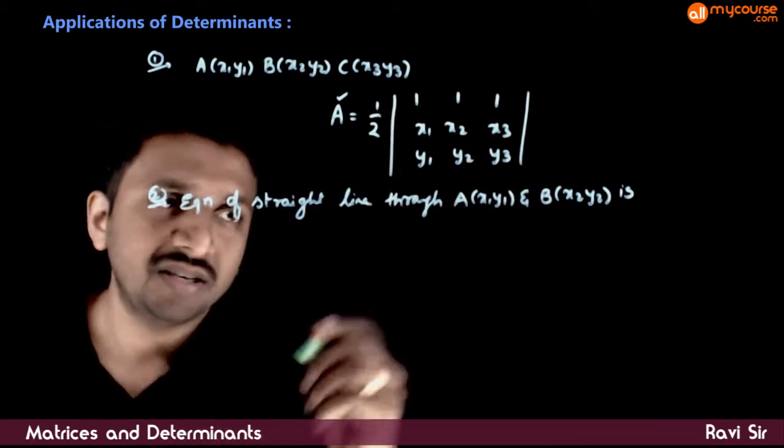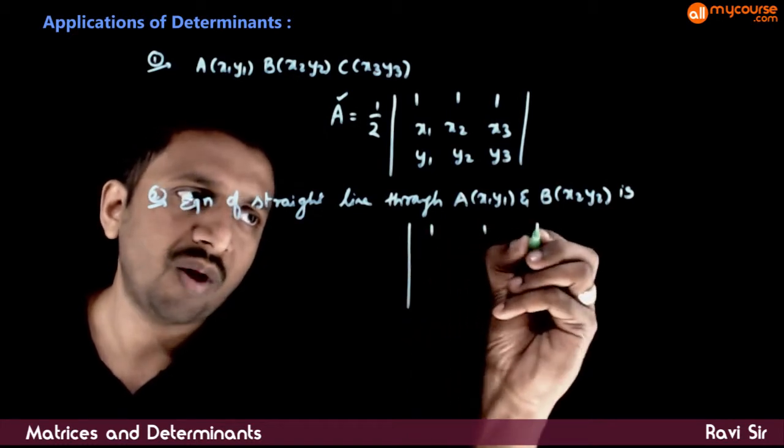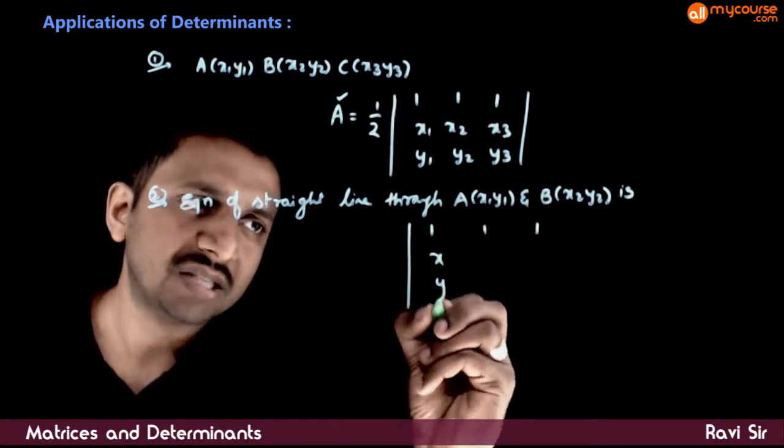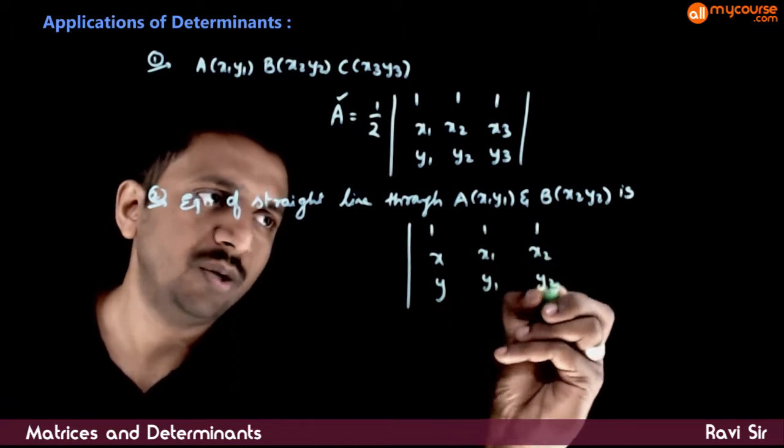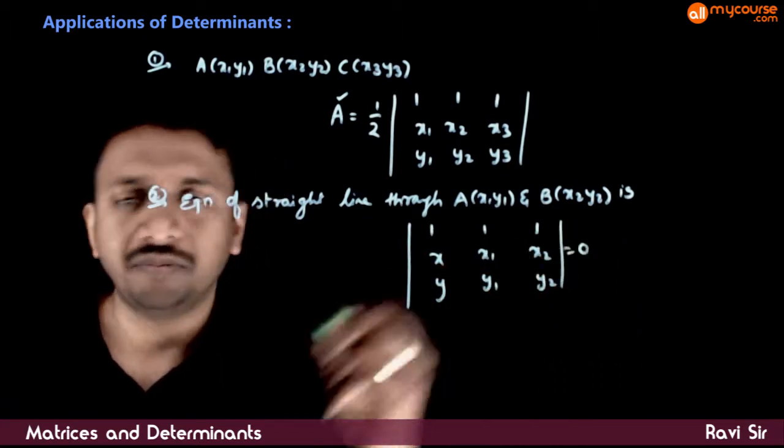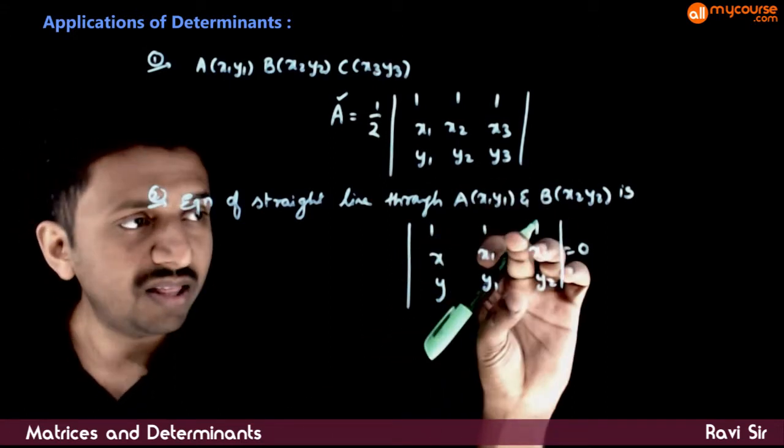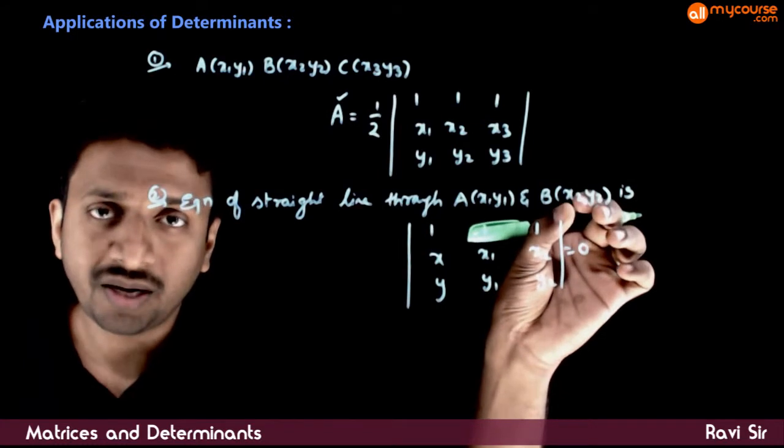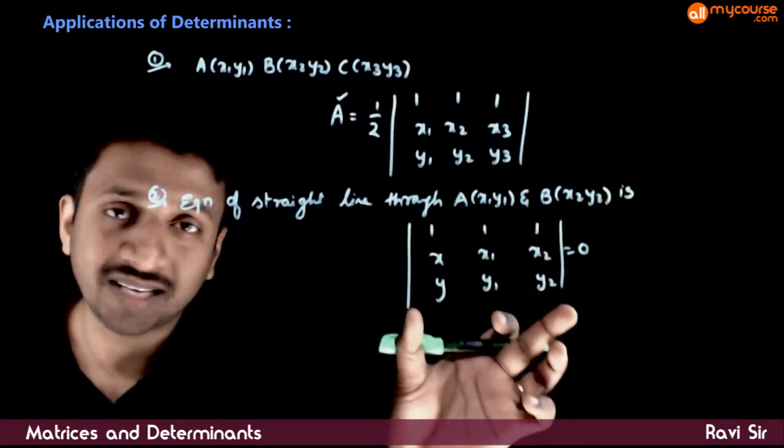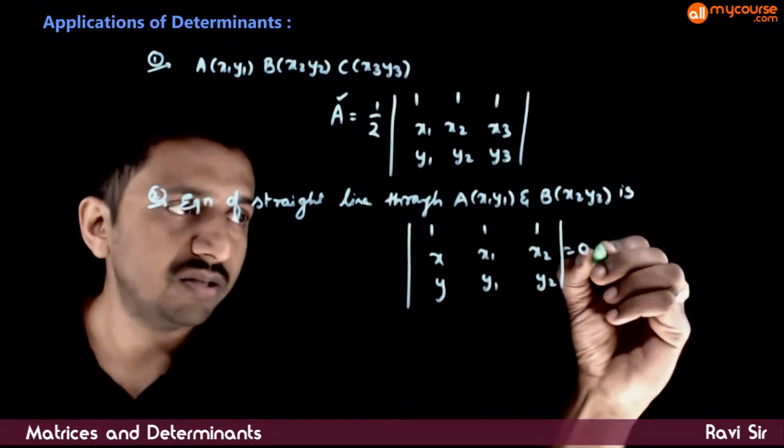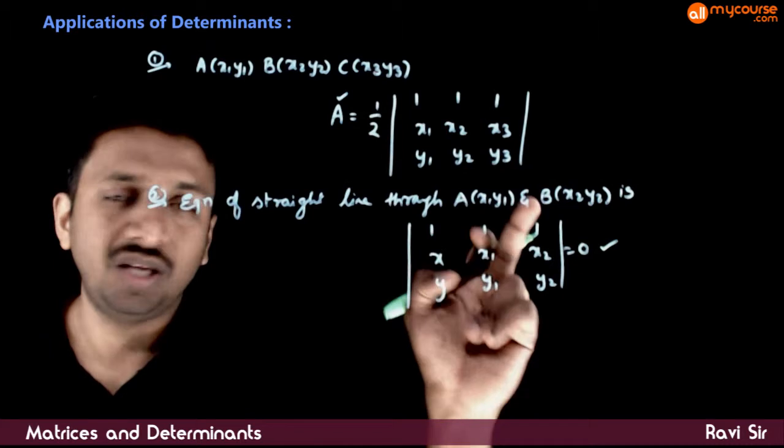but in terms of determinants, the equation of the straight line is: the determinant with rows (1,1,1), (x,x1,x2), and (y,y1,y2) equals 0. In place of x1,y1 write the first given point, and in place of x2,y2 write the second given point. If you expand this determinant, you get a linear equation in x and y equal to 0, which gives you the equation of the straight line through these two points.